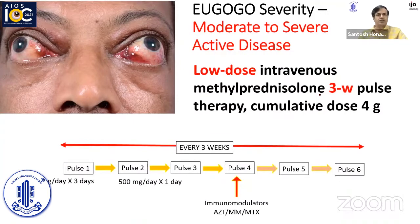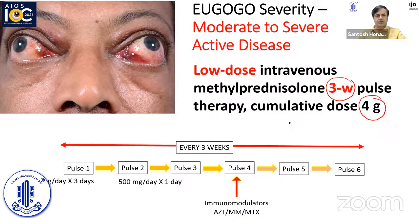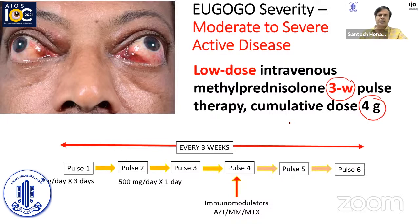We follow a low-dose intravenous methylprednisolone protocol given 3-weekly, as opposed to the EUGOGO weekly pulse therapy. The total cumulative dose is only 4 grams. Lower dose means lower side effects. Giving a gap of at least 3 weeks between each pulse helps minimize complications. We go by chemotherapy logic where every pulse takes away about 60-70% of activated T lymphocytes, and the regeneration time for activated T lymphocytes is about 2-3 weeks. So timing is possibly the key. Weekly IVMP has slightly lower efficacy in our experience compared to 3-weekly IVMP.